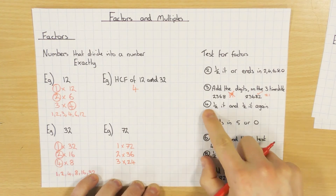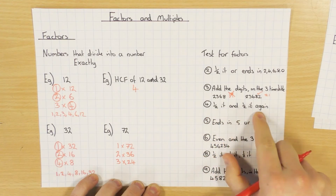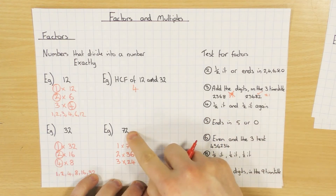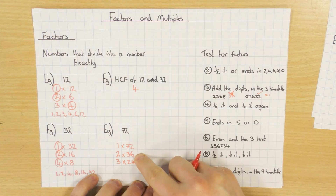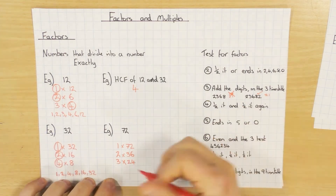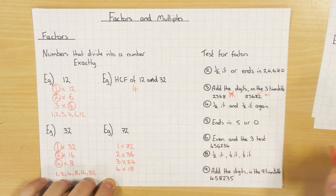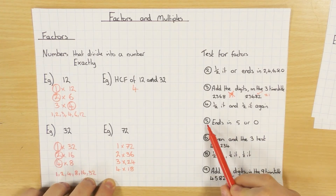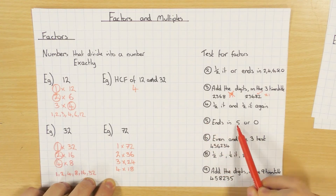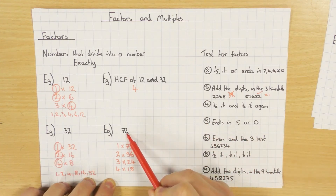Next number to test is if 4 is a factor. To test that, you just half it and half it again. Well if I half 72 I get 36, and if I half it again I get 18 — a nice whole number — so yes, 4 is going to be a factor as well: 4 times 18 gives me 72. To test if 5 is a factor: does it end in a 5 or a 0? Well 72 ends in a 2, so no, 5 isn't going to be a factor.